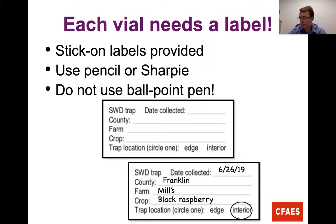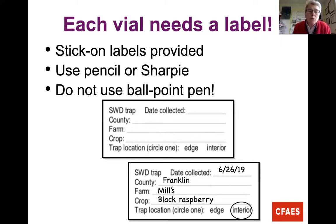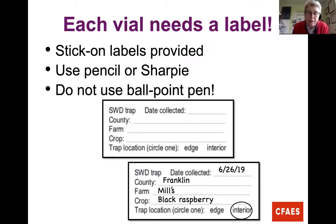It's very critical for us to get usable data — every vial must be labeled. We will provide stick-on labels. Please use either a pencil or a Sharpie — do not use ballpoint pen because that often gets washed off. The most important information is the date collected and the trap location — circle whether it's an edge trap or interior trap. It will definitely help to add the county, farm, and crop. You can abbreviate, but that information needs to be there every time.